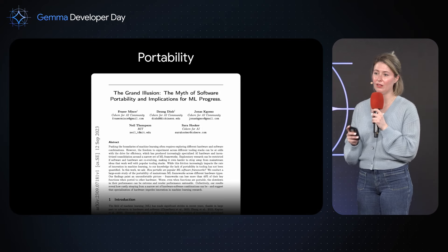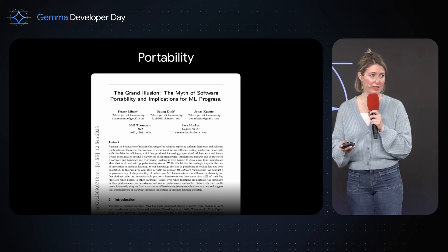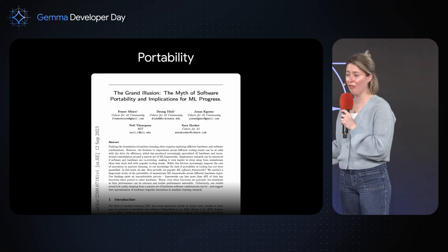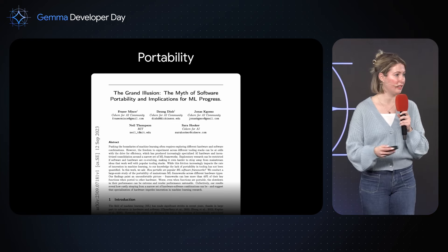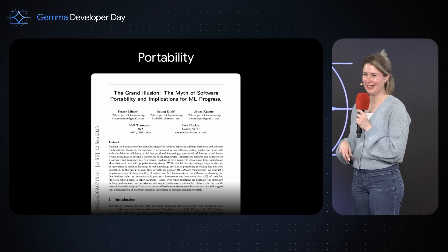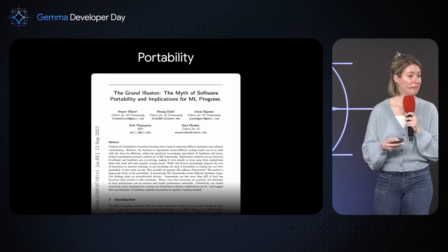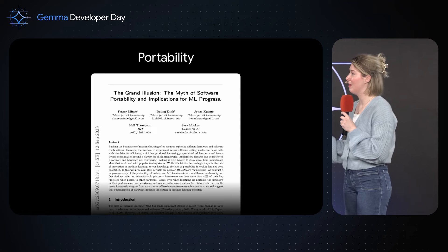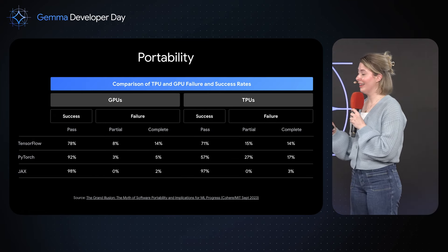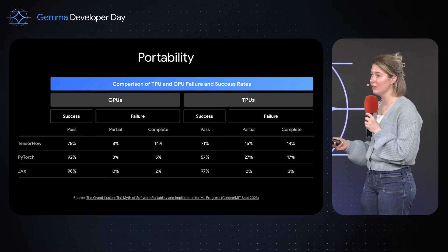Another benefit we looked to in JAX is its portability. One of the goals of having open models is that we want anyone to be able to use Gemma across any configuration of hardware, which means we need our models to be easy to port across different tech stacks. This study was done by Cohere collaborating with MIT, and they analyzed TensorFlow, PyTorch, and JAX. JAX had overwhelmingly the highest success rate porting between GPUs and TPUs.